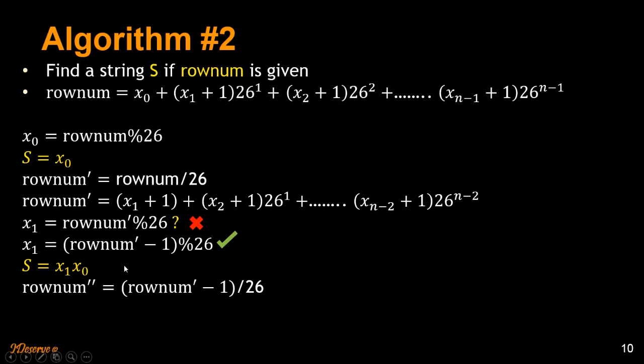Once we get x1 x0, we again do row number dash minus 1 divided by 26. Then we get this. So x1 terms goes away because we have divided it.